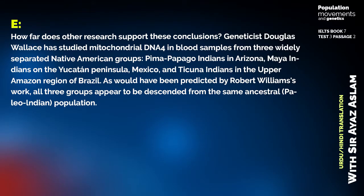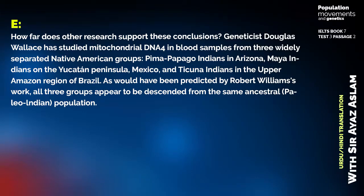Douglas Wells' study using mitochondrial DNA from blood samples of three widely separated native American groups — Pima-Papago Indians in Arizona, Maya Indians, and Ticuna Indians of the upper Amazon — found that, as predicted by Robert William, all three groups appear to be descendants from the same ancestral paleo-Indian population.